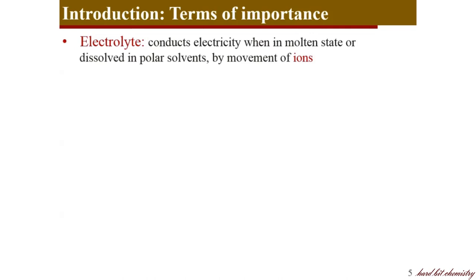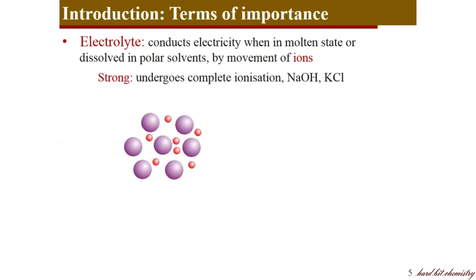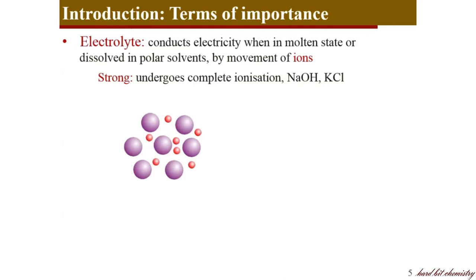Electrolytes are of two types. The first type is strong electrolytes — they undergo complete ionization when in molten state or when put in water. For example, potassium chloride, sodium hydroxide, etc. And then there are weak electrolytes — they undergo only partial ionization. Only a part of the molecules undergo ionization at reasonable concentrations. Acetic acid and ammonium hydroxide are examples of weak electrolytes.